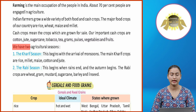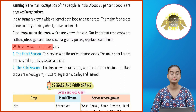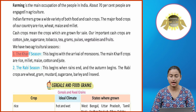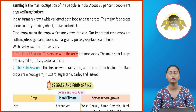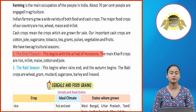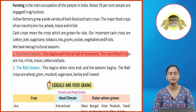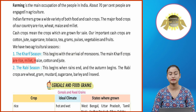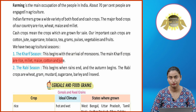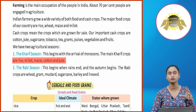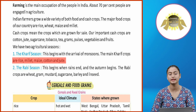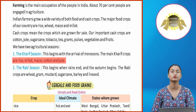We have two agricultural seasons. Number one, the Kharif season. This begins with the arrival of monsoons. The main Kharif crops are rice, millet, maize, cotton and jute.